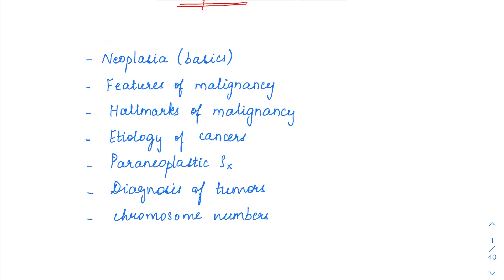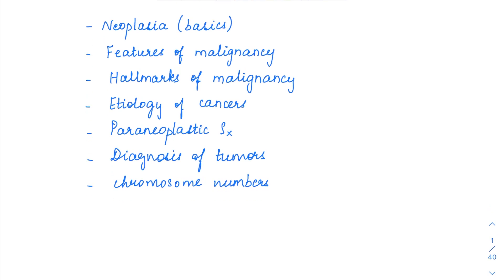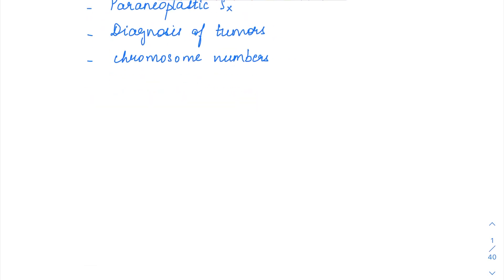Next we will start with neoplasia. Under neoplasia, we will be discussing the basics first, then the features of malignancy, then the hallmarks of malignancy which are the fundamentals, then the etiology of cancers, then paraneoplastic syndromes, then diagnosis of tumors, and finally we have a recap about various chromosome numbers along with the genes.